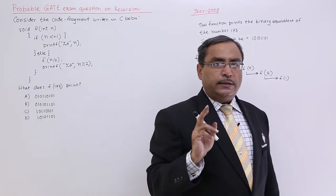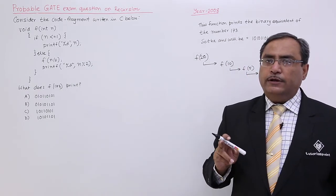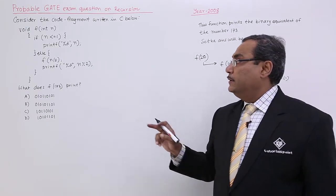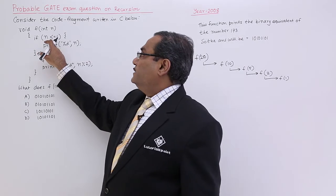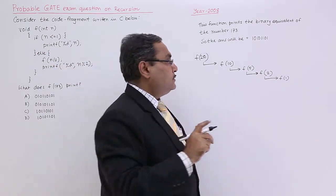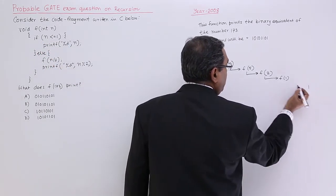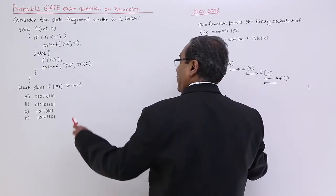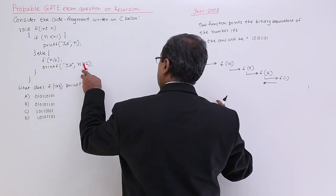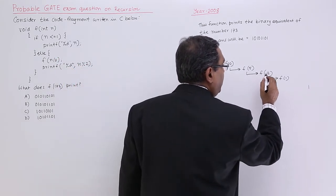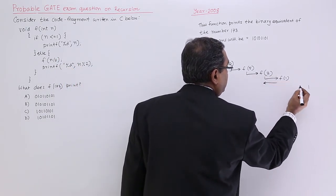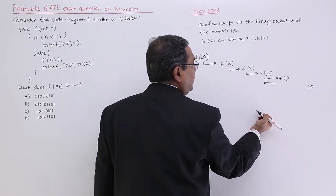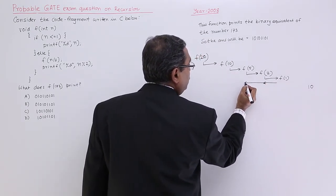I am just showing that really it is calculating the binary of the given number n. Now when n is less than equal to 1 so it will print the value of n. 1 will get printed then then the control will come back to this f 2 and then so it has been called. Now n percentage 2 will get printed so n 2 percentage 2 means 0 will get printed then control will come to this.